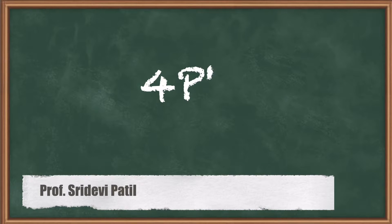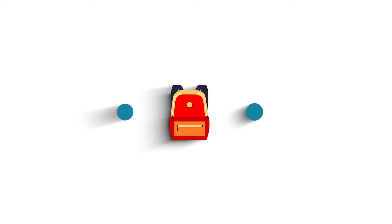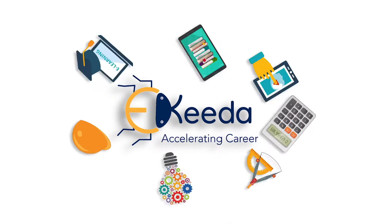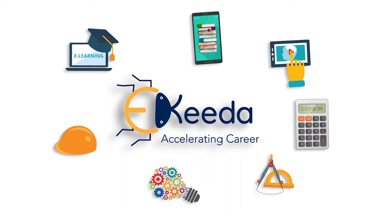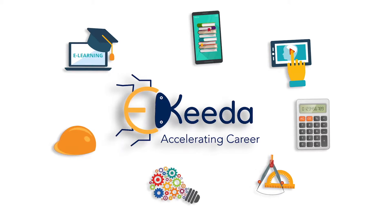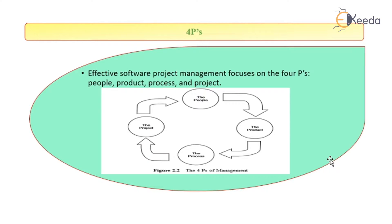Hey students, we are going to study about the four P's in the software development life cycle. These four P's include people, product, process, and project. They are also called as part of management spectrum.